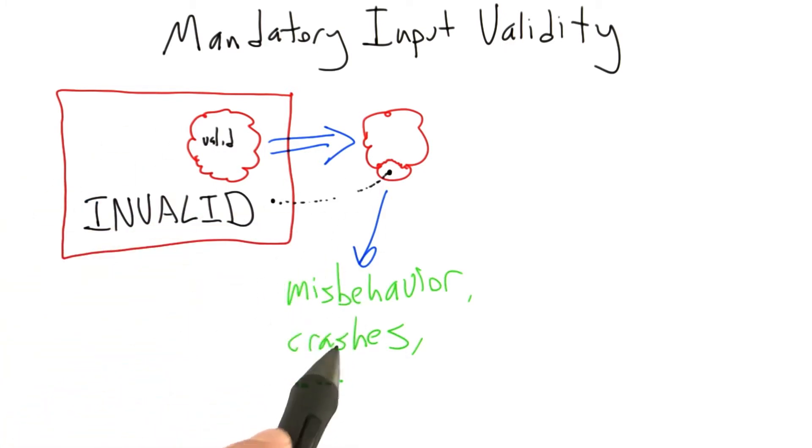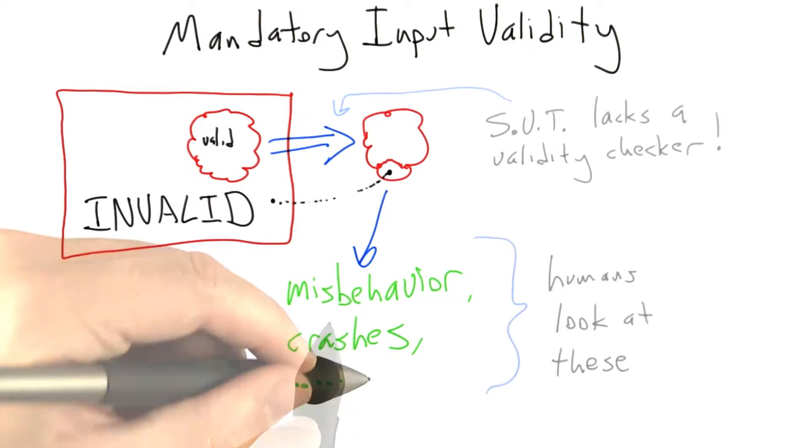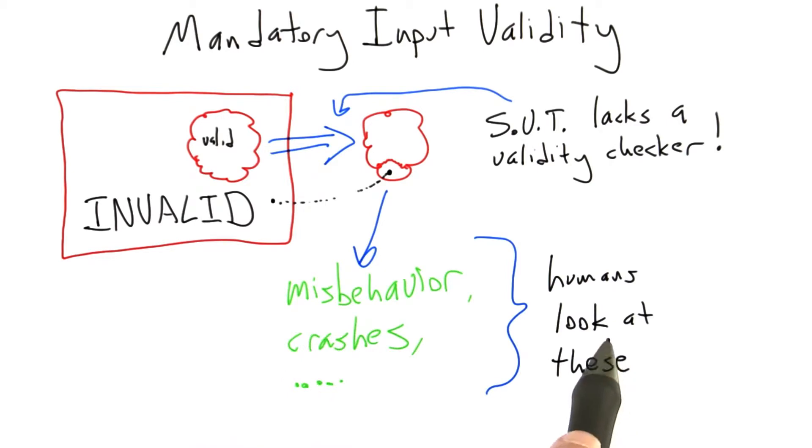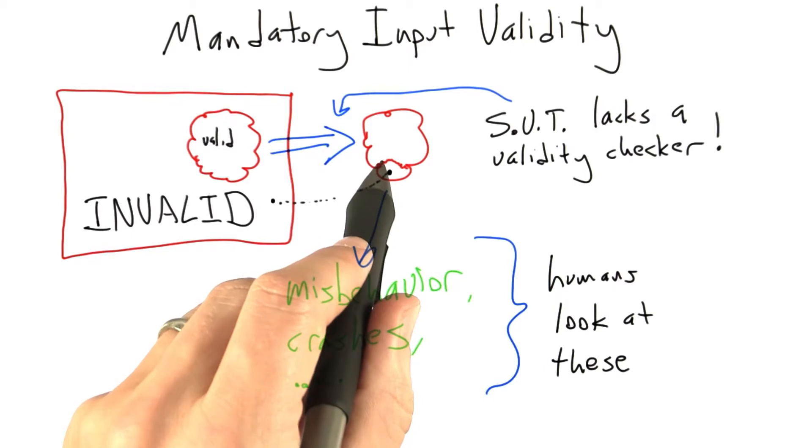Normally if we crash the software under test, this is something that we have to track down manually, and now we're taking a developer's time. Once we start taking a human's time, we're essentially mounting a denial of service attack on whoever's processing bugs that come out of the random testing loop.